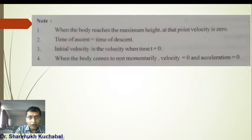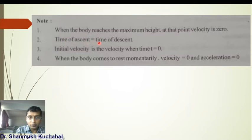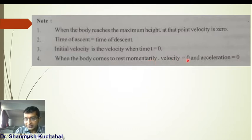When the body reaches maximum height at any point, velocity is 0. Time of ascent is always equal to the time of descent. Initial velocity is the velocity when time is taken as 0, that is t = 0. When the body comes to rest momentarily, velocity is taken as 0 as well as acceleration is taken as 0.